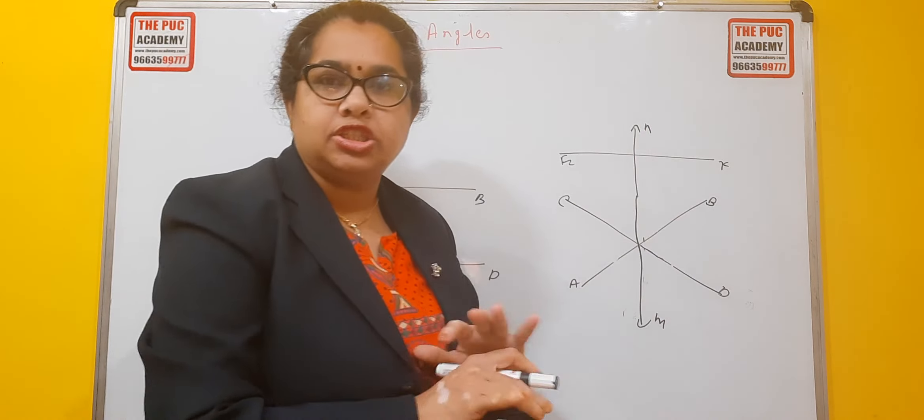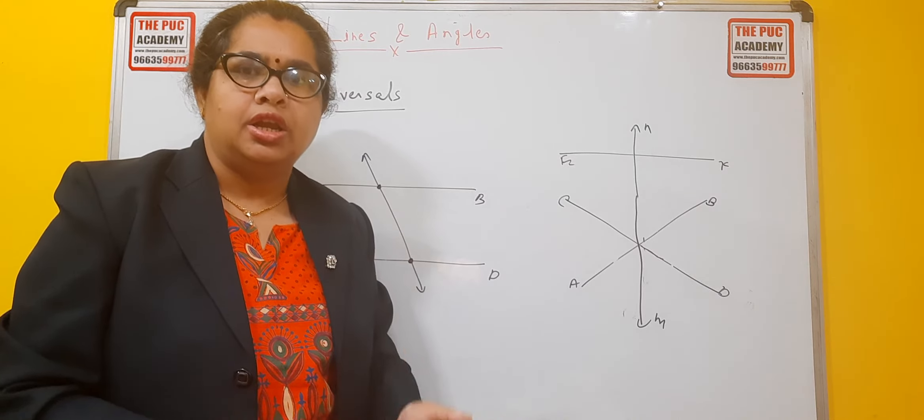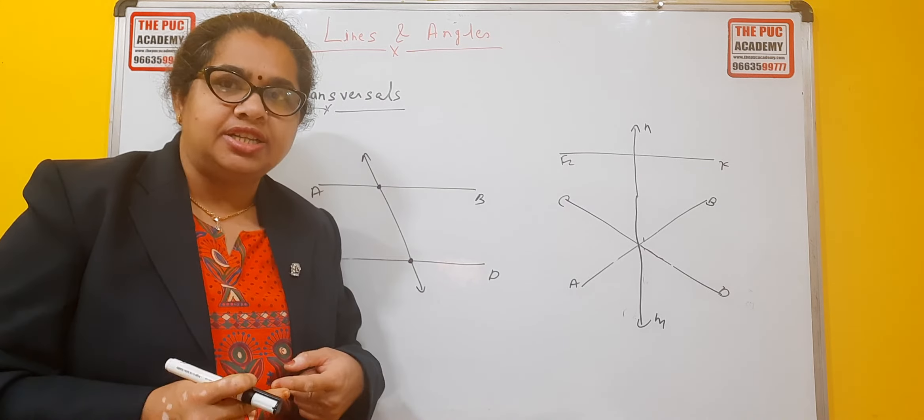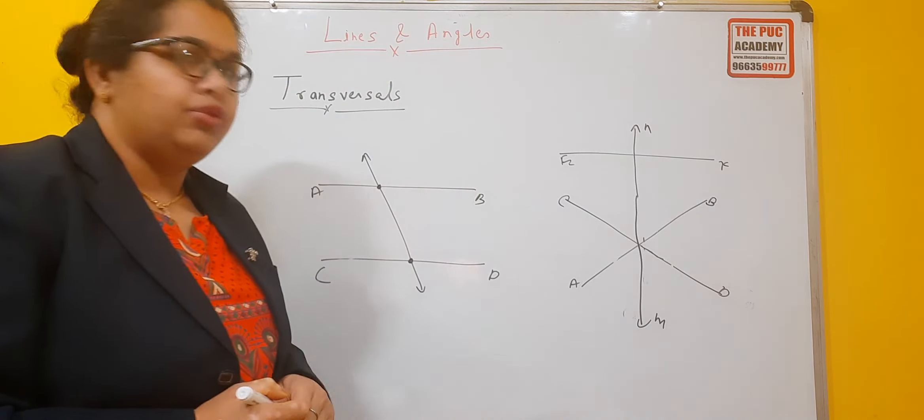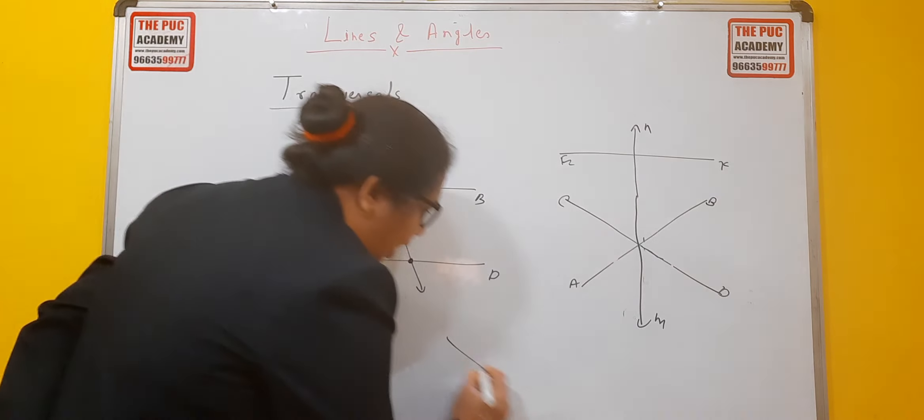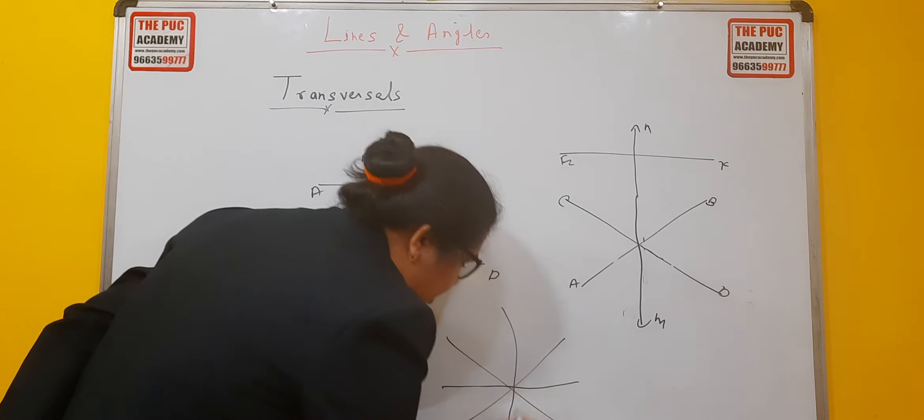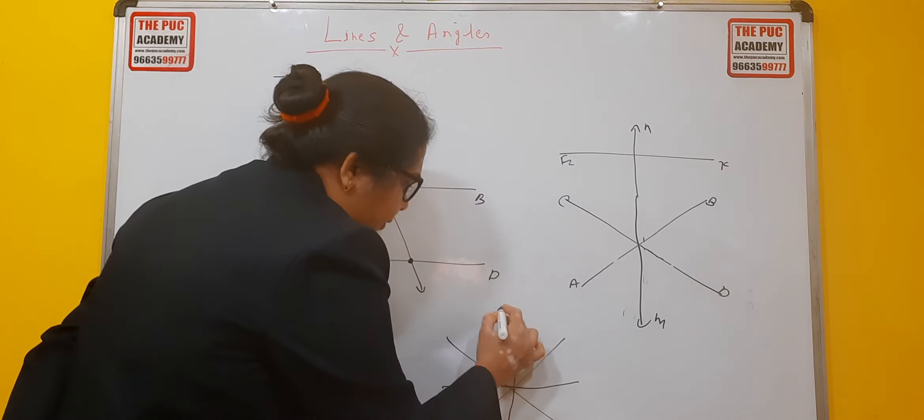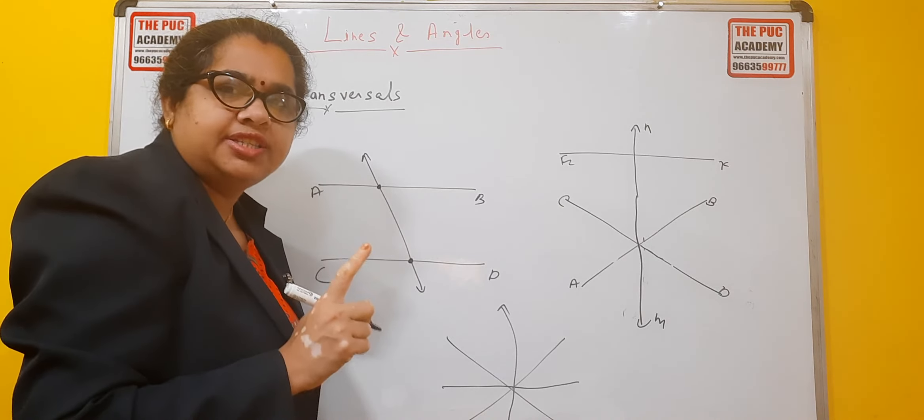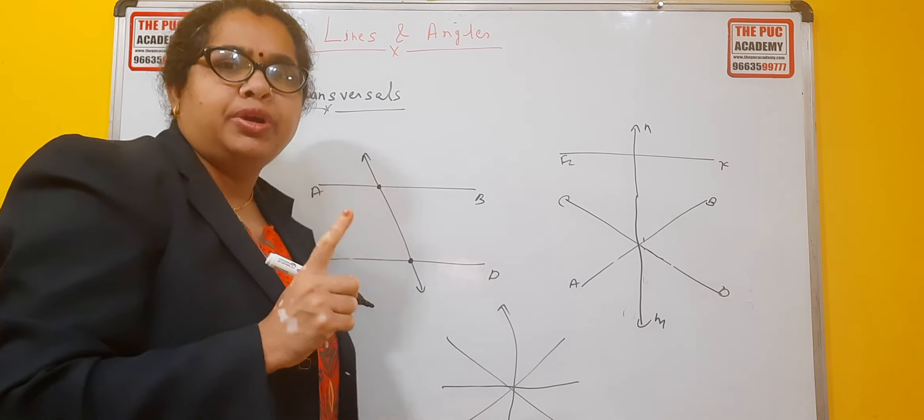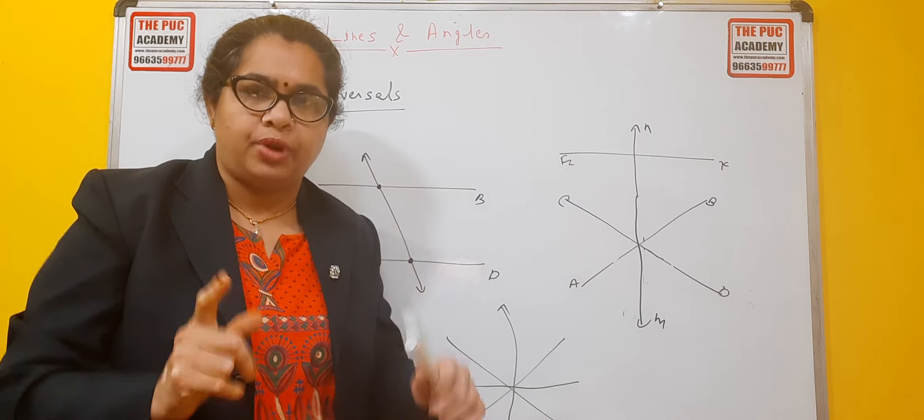So line M, N is not a transversal here. It should intersect at different points. You can see so many examples here. Like you can make one line and tell this is not a transversal, because transversal always intersects at different points. You must remember transversal intersects at different points, children.